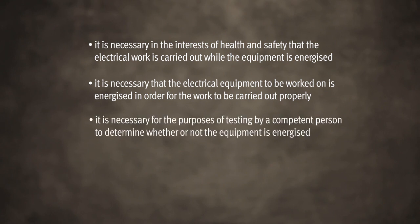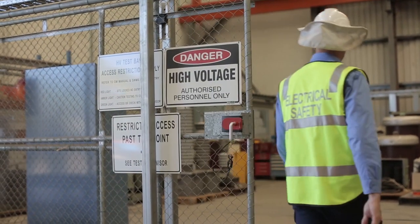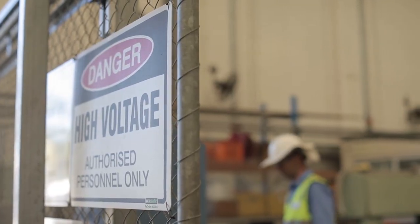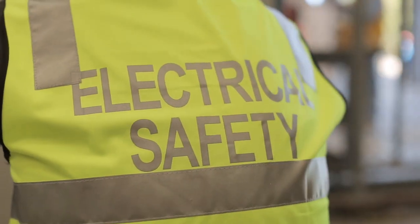Or, it is necessary for the purpose of testing by a competent person to determine whether or not the electrical equipment is energised, or there is no reasonable alternative means of carrying out the work. You can also examine the fault current limit of the installed local and upstream protective devices. If you have any doubts regarding your safety or that of the installation, confirm with the manufacturer that sufficient protection exists. If your investigation reveals inadequate protection, advise the owner both verbally and in writing of the hazardous situation.